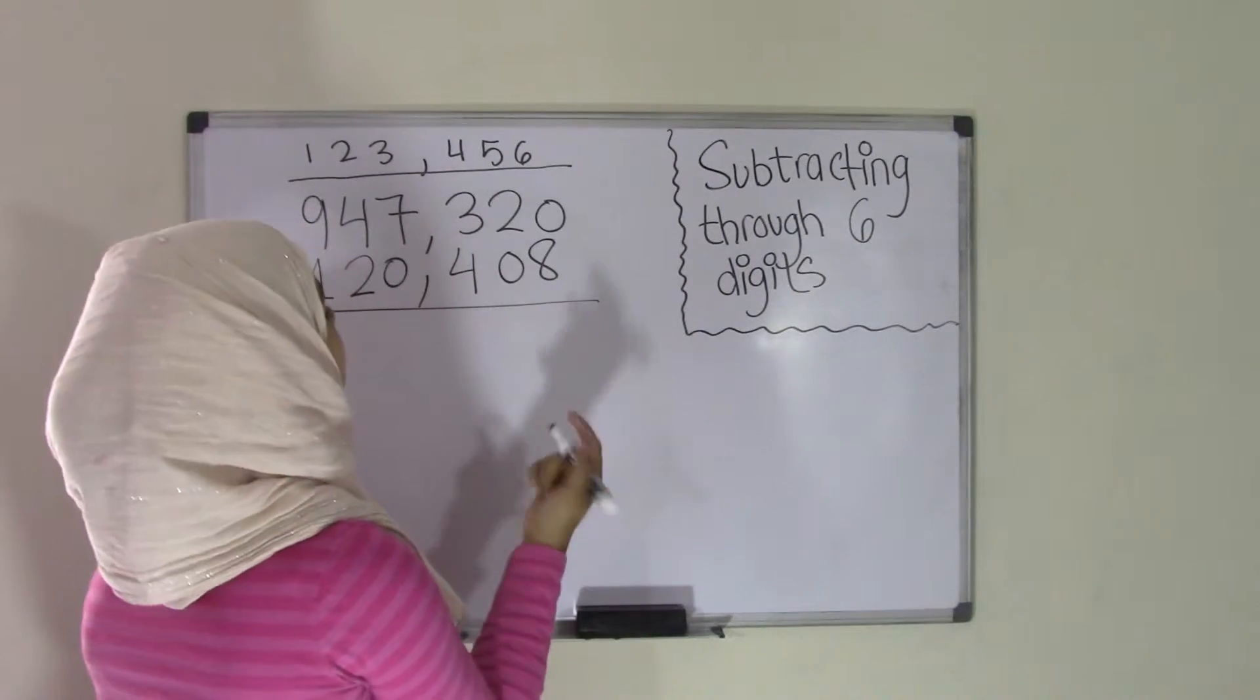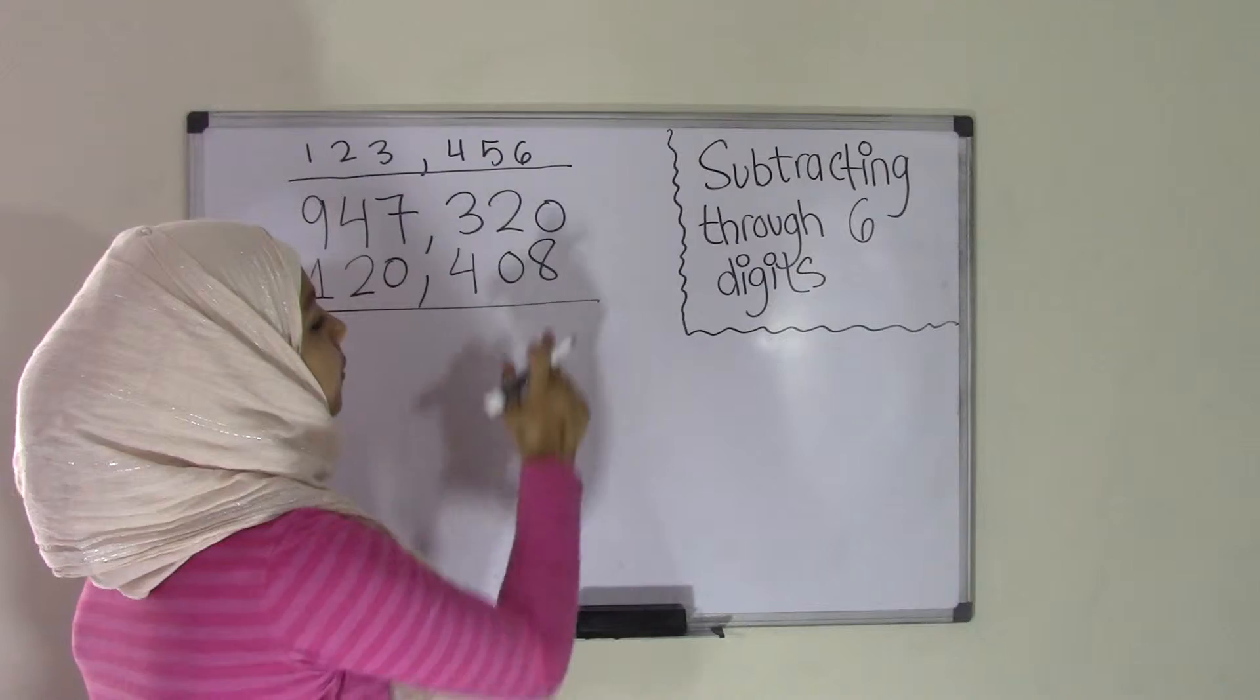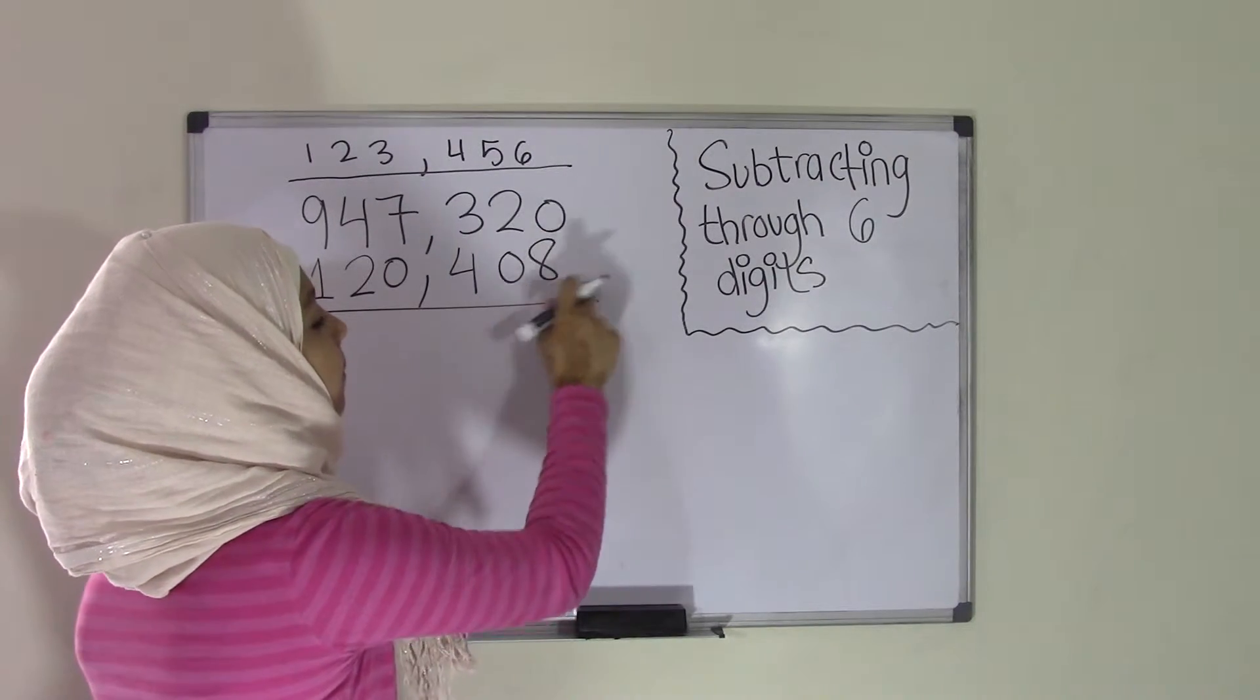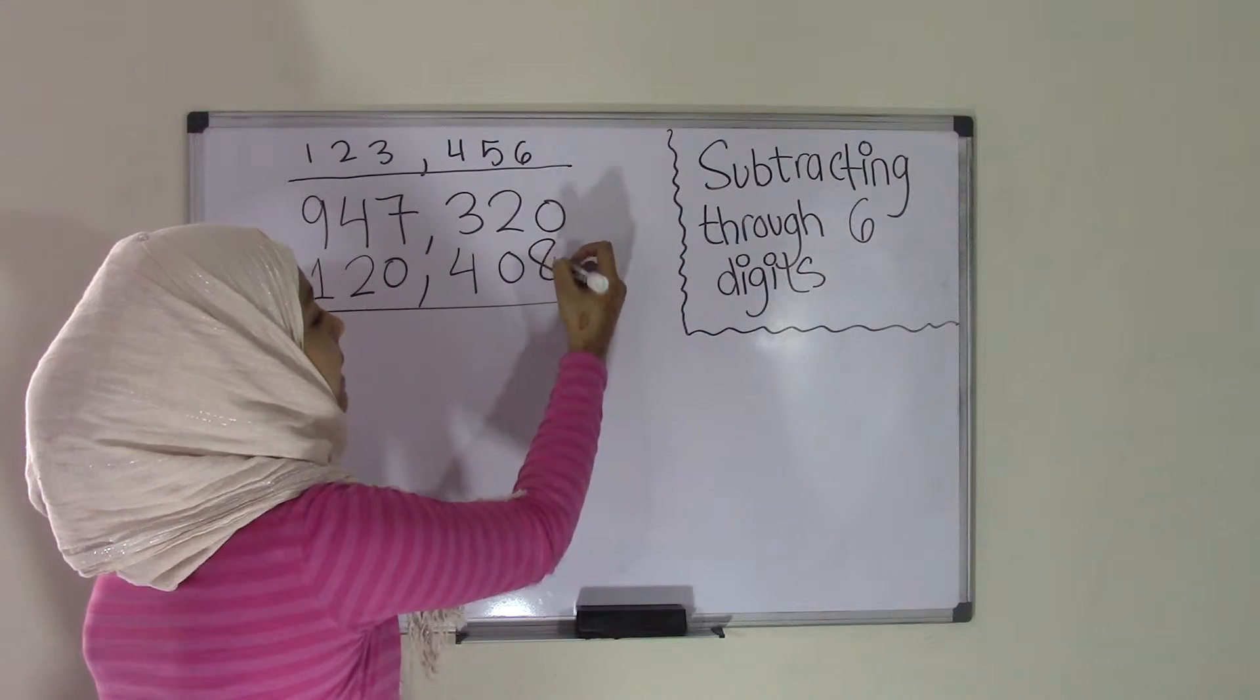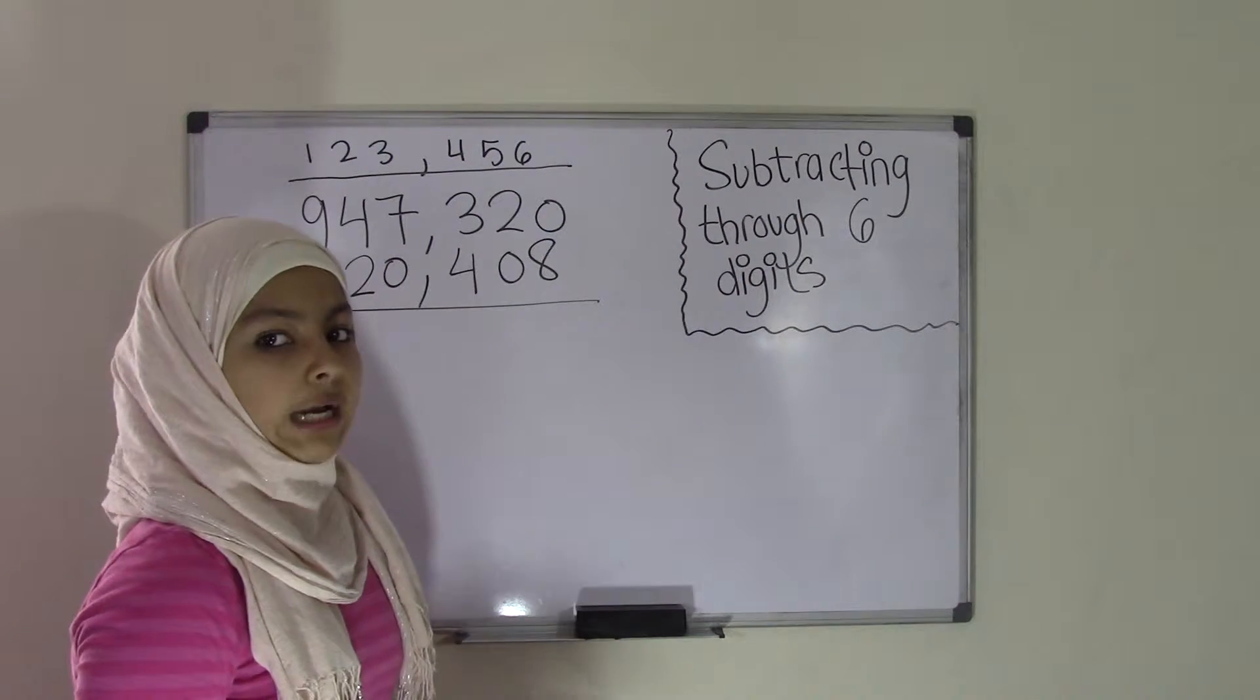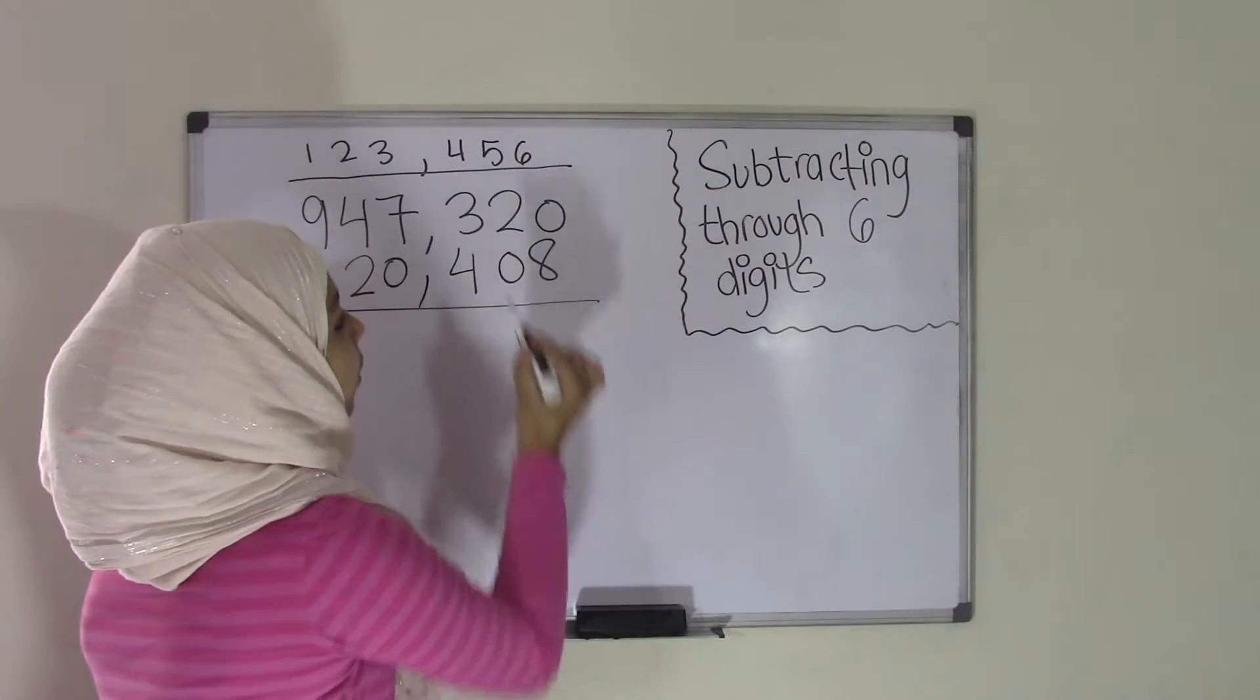So first, according to right to left, is 0 minus 8. Now remember we're subtracting the bottom number from the top number. So you have a total of 0 and you have to take away 8. Now we know that we can't really subtract 8 from 0, right? Because 0 has no value.